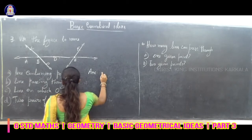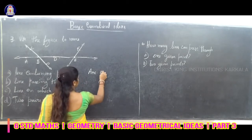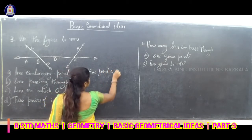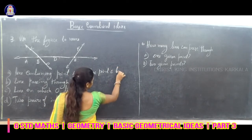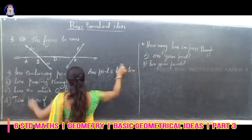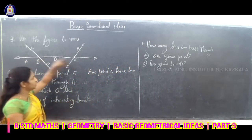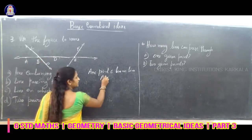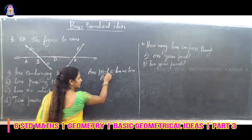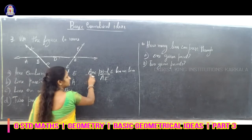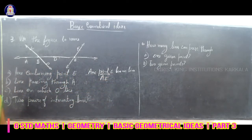Therefore, the answer is: point E lies on line AE. AE is a straight line. That is what we can see — point E lies on line AE.